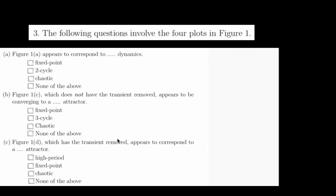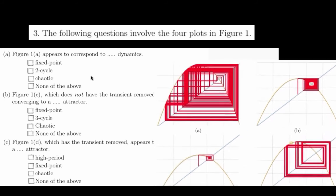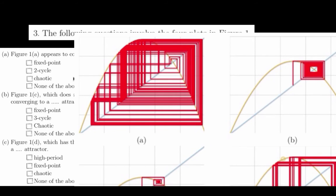The next three questions ask to match Cobweb plots in Figure 1 to their corresponding dynamics. Part A asks, what type of dynamics correspond to those seen in Figure 1A? This type of Cobweb plot is associated with chaotic dynamics.